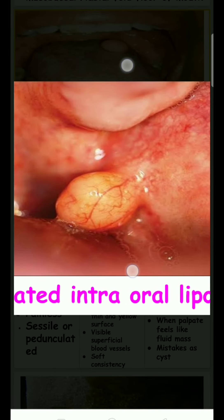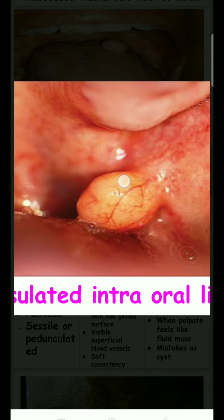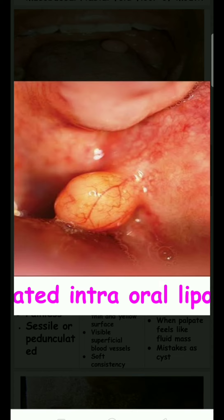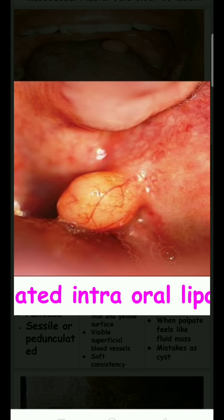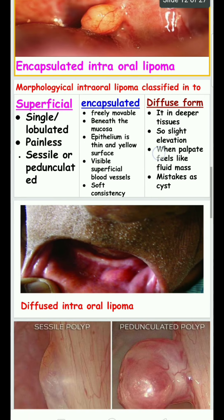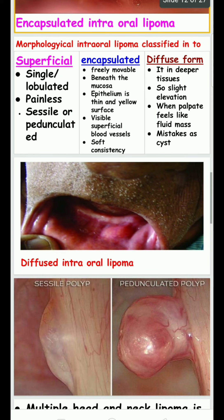In the encapsulated form, it is very yellow in color, blood vessels are seen, it has a very soft consistency, and is easily movable. In the diffused form, it is present in deeper tissue, so only slight elevations are seen. When palpated, it feels like a fluid mass.